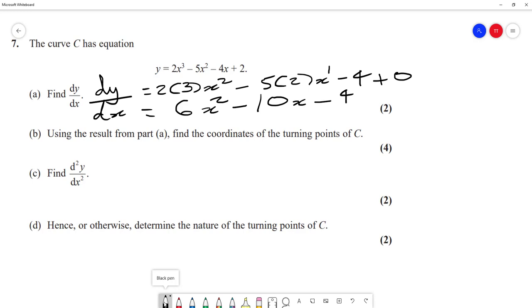Now turning points, or stationary points, always occur when dy/dx equals zero. So we set dy/dx equals zero: 6x² - 10x - 4 = 0, and we can use our calculator to solve that.